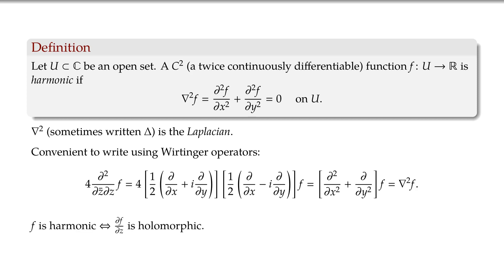Now one of the things to notice is that f is a harmonic function if and only if the ∂/∂z derivative of f is holomorphic. If f is harmonic, the ∂/∂z derivative is the first part of this factorization, and saying that the ∂/∂z̄ derivative of that is zero clearly means that the ∂/∂z derivative of f is holomorphic. Conversely, if it's holomorphic then the ∂/∂z̄ derivative is zero and therefore the Laplacian of f is zero. So that's quite useful — we can now try to integrate.